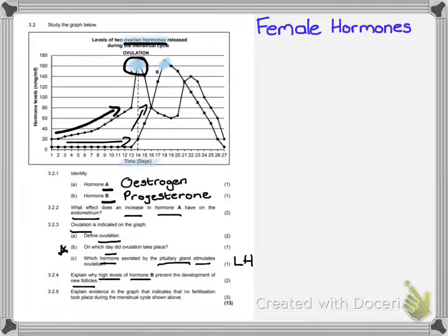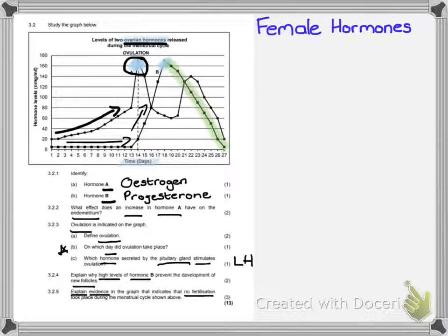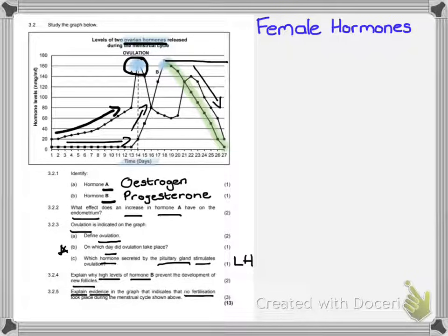The final question, 3.2.5, asks: explain evidence in the graph that indicates no fertilization took place during the menstrual cycle shown. Looking at the graph, we can see hormone B — progesterone — decreases over the remaining days. If a person were pregnant, the graph would have leveled out, because the corpus luteum secretes progesterone to maintain the pregnancy. Since progesterone decreases, we know the corpus luteum is degenerating, less progesterone is secreted, and therefore the endometrium falls away — confirming no pregnancy took place.